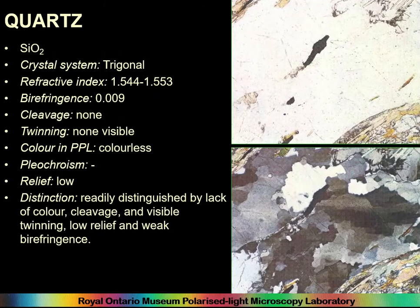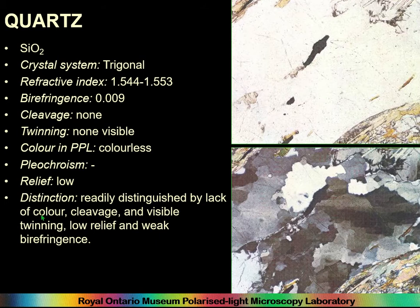Quartz is something you'll definitely be seeing a lot of in thin section. It's in the trigonal system. Its refractive index gives it a birefringence of 0.009 and quite low relief. It doesn't have any cleavage, twinning, color, or pleochroism. Quartz is already distinguished by the lack of all of these things — most things that look like it will have some of these properties, making quartz quite distinctive.